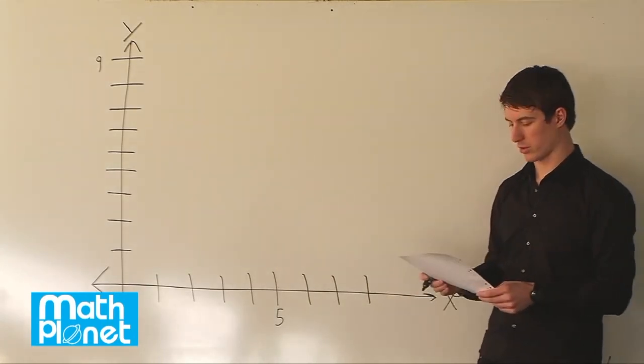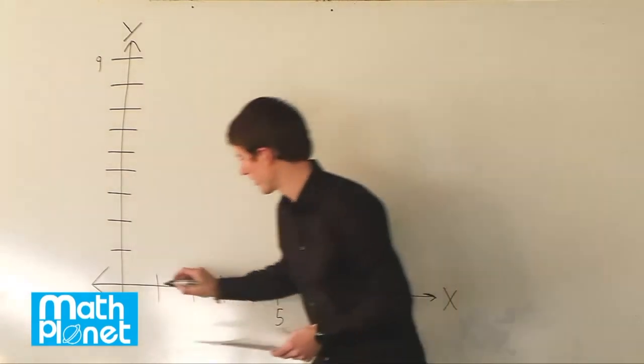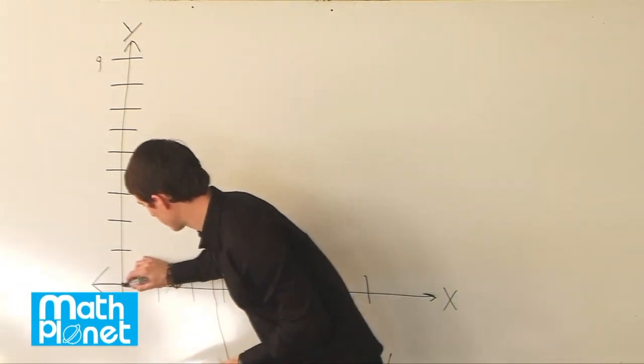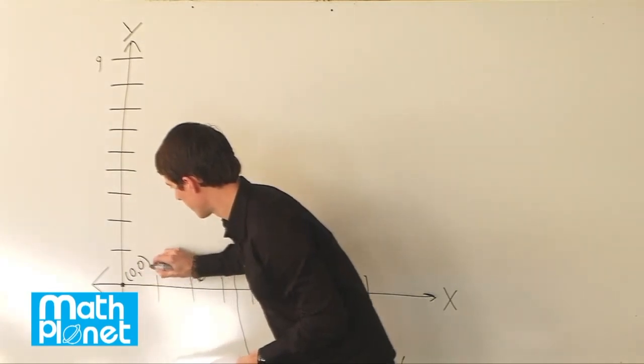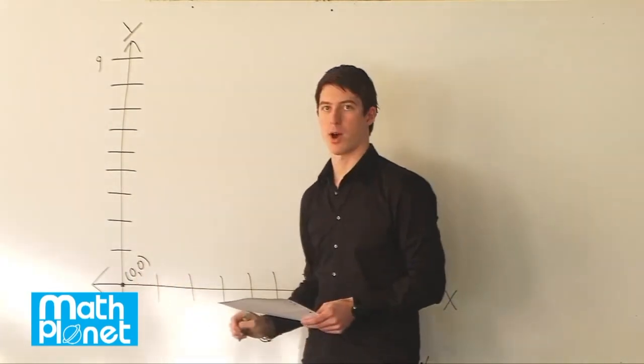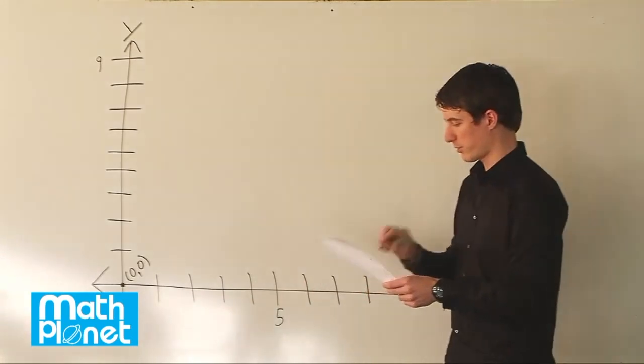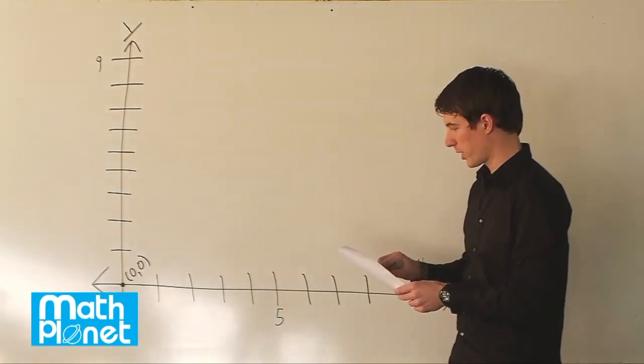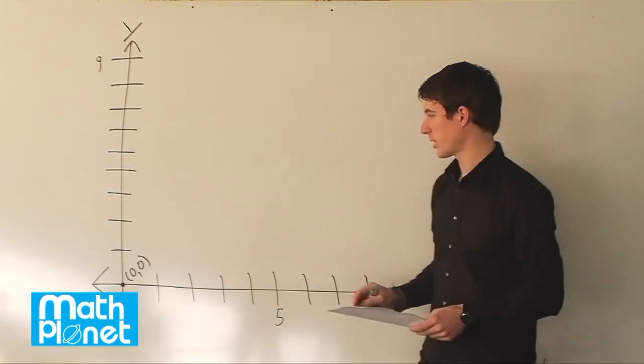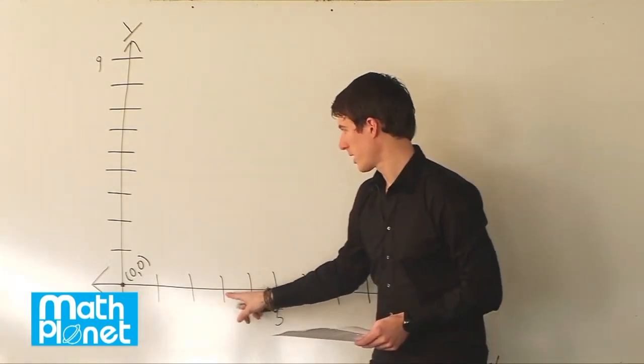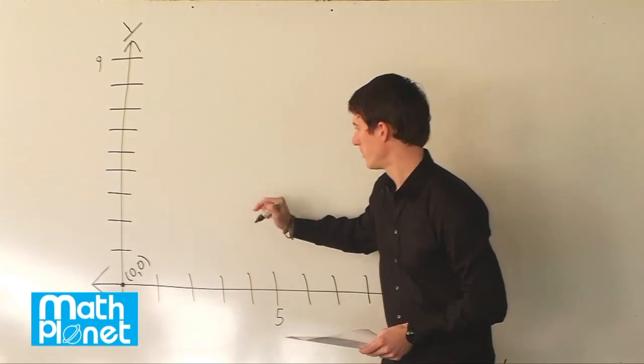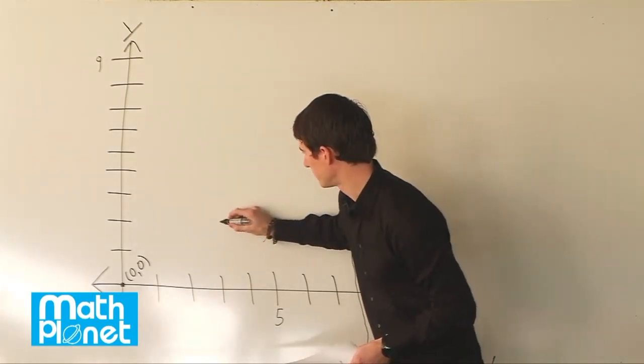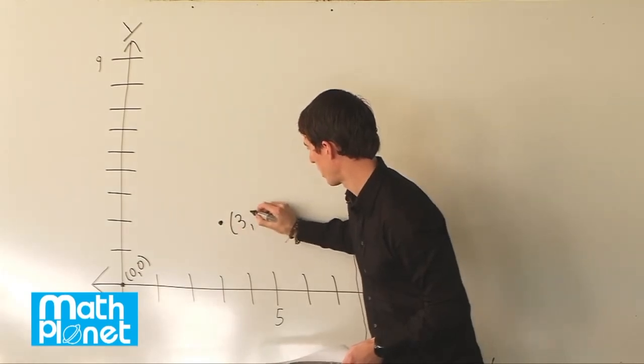The first one is the origin, the point is 0, 0. So of course if it's 0, 0, it's right here. 0, 0. So we always write x comma y. So on the next point we have 3 comma 2. 3, 2 is x equals 3 and y equals 2. So we go to the right 3 and then up 2. So that's right about here. 3 comma 2.